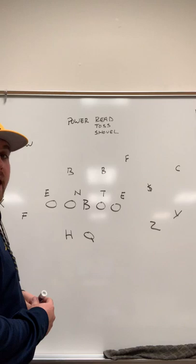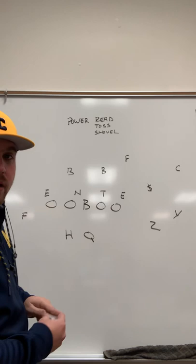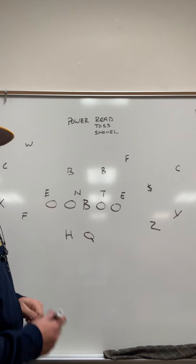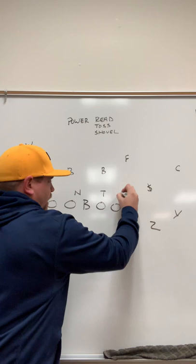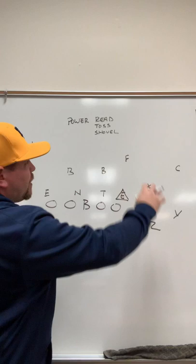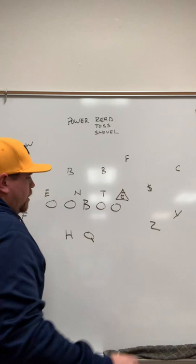We're gonna go with power read to start. We're in a two-by-two set, ten personnel, one back. We're two-by-two, even front. Showing everything against the even front right now. Six guys in a box — we see this quite a bit with us. So power read: as we talked in the last video with power, the end man on the line of scrimmage the offensive line does not worry about. That's the guy our F was taking care of in the power. Now when we're going power read, we're gonna read him. We don't need to block him. That's why we put the triangle around that guy — we're gonna read him.